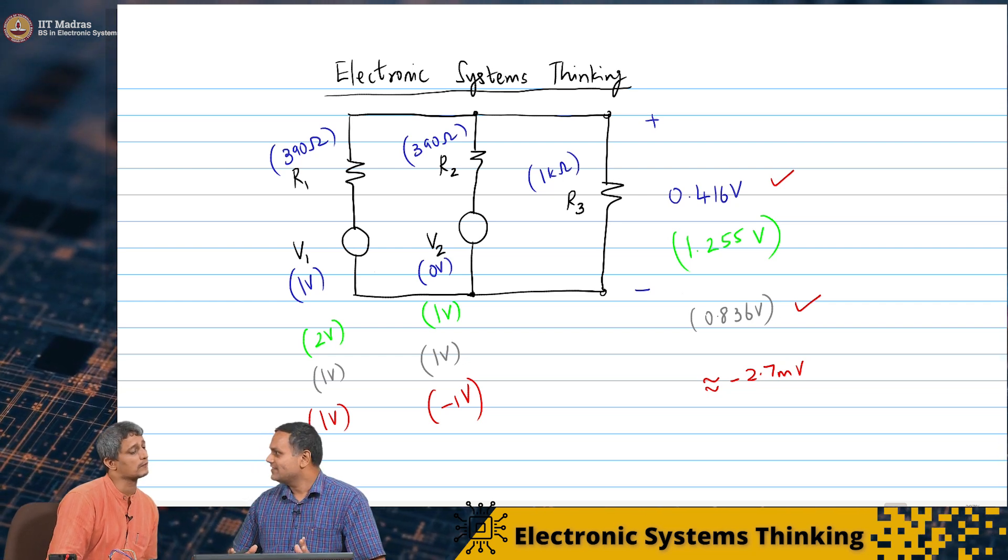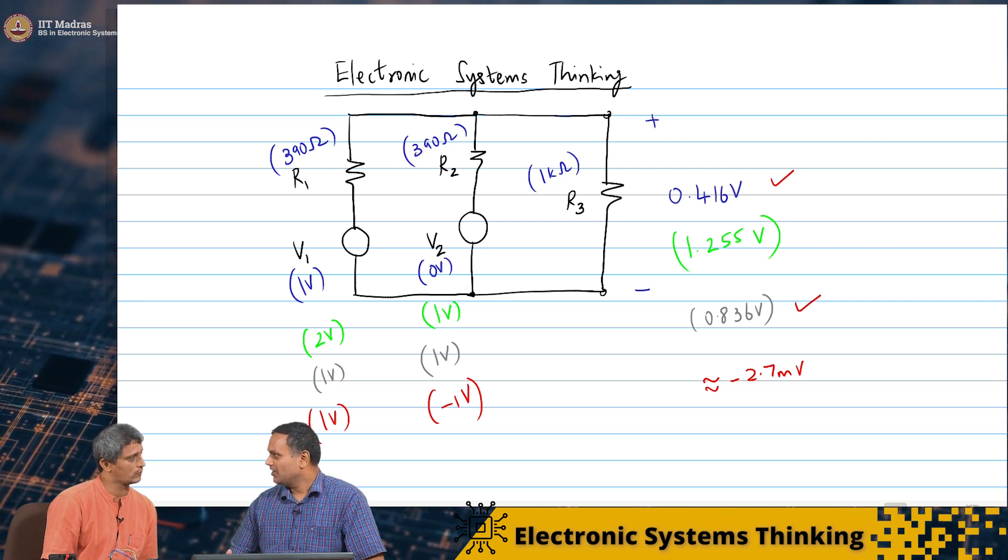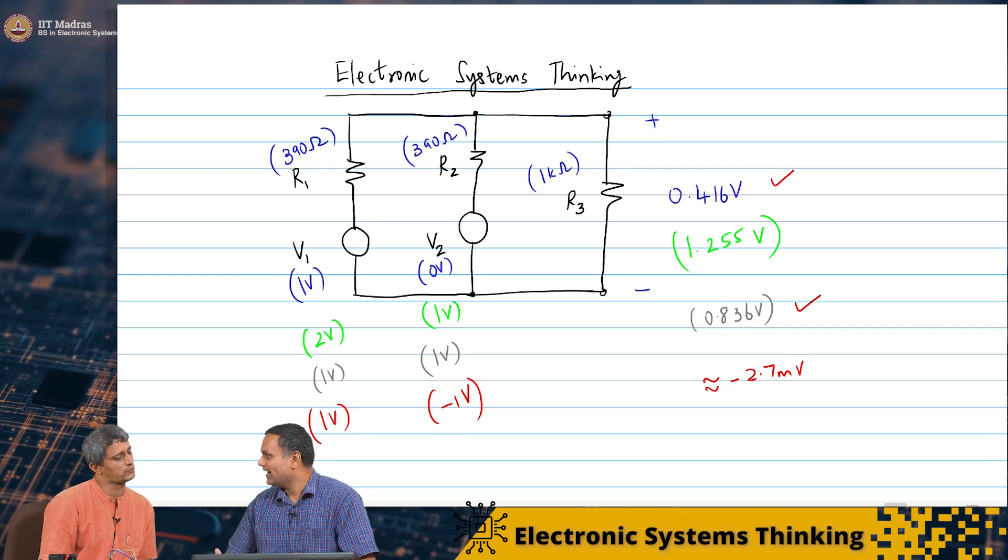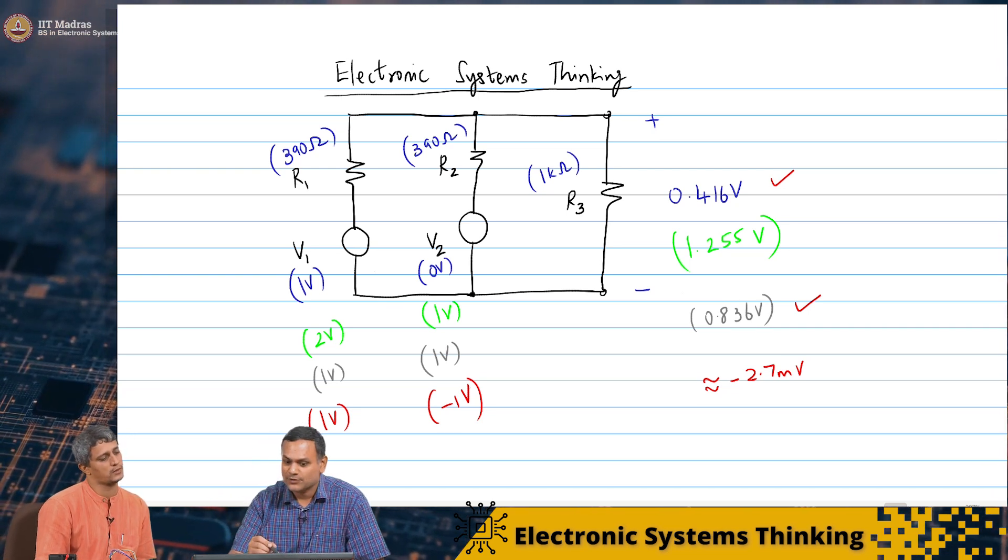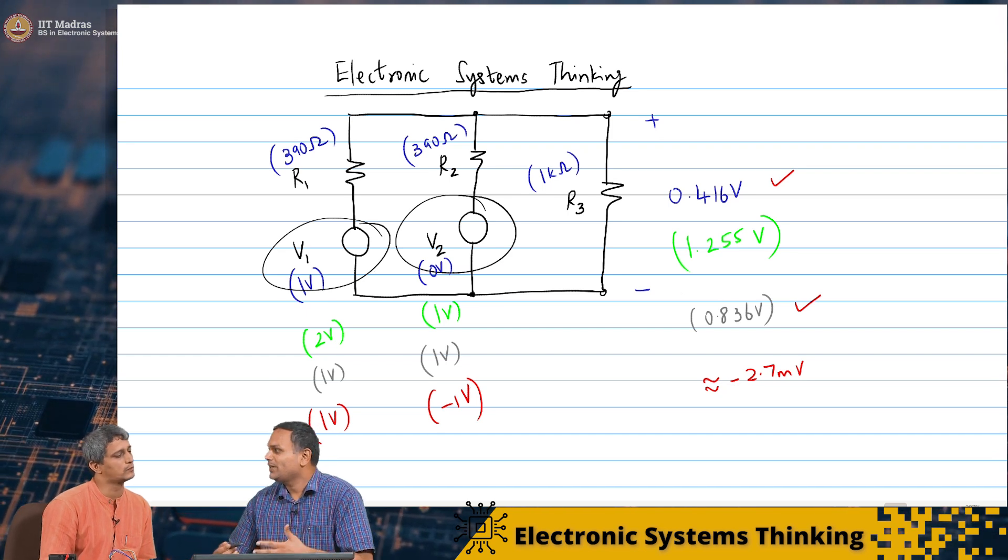In fact, now what this tells you is that you can actually break this down into individual inputs being applied. So, now you imagine X1 was V1, X2 was V2. Those are the two inputs that are being applied.